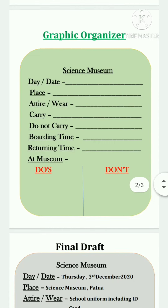Now let's see the graphic organizer. We will write the name of the place first — that is Science Museum. Then day and date. Then place. After that, attire, which means what you wear — that is school uniform. Then carry, meaning what you will carry with you. Then do not carry, the things you are not supposed to bring. Then boarding time, returning time, and finally at museum — the do's and don'ts you will follow — written down here.